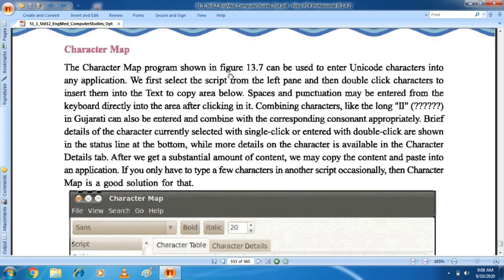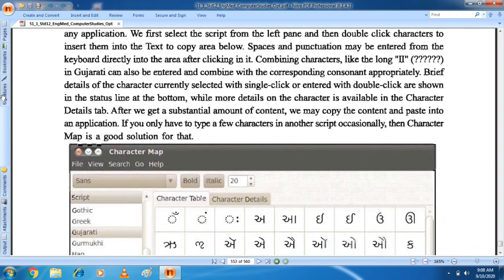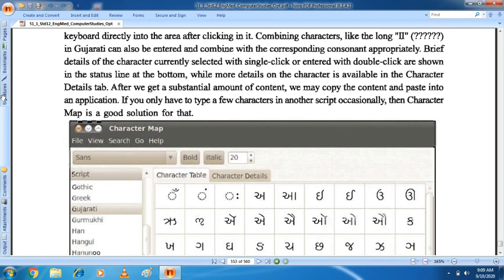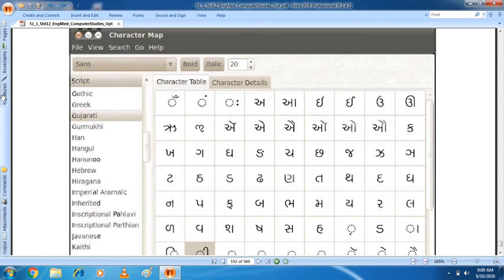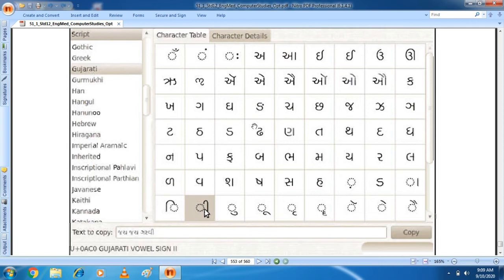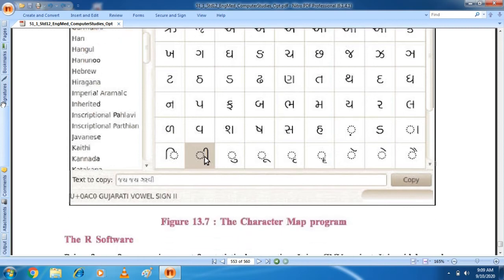The Character Map program shown in figure 13.7 can be used to enter Unicode characters into any application. Students, actually Character Map is what is happening. First of all, you can see a figure in which you can write characters in any language. If you want to write characters in Japanese, Gujarati, different types of languages.